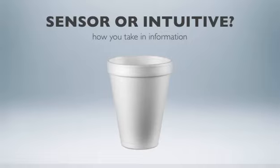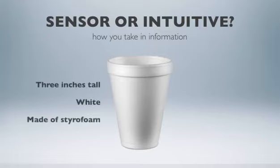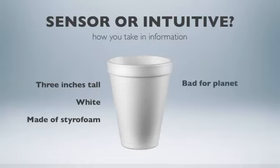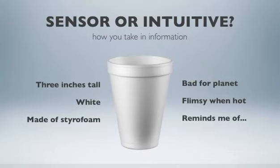Now let's take a look at the way sensors and intuitives might respond. Sensors tend to give facts about the cup. They might say the cup is three inches high, it's white, and it's made of styrofoam. It's shaped like a cone and has a lip around the top edge. Intuitives are a different story. They might compare the cup to other things or make up a little story about the cup. An intuitive might mention that styrofoam is bad for the environment, that these cups are very flimsy when filled with hot liquid, or that the cup reminds them of the Sunday school meetings they go to every week. Take a moment to think about how you take in information.